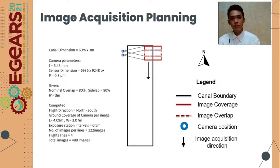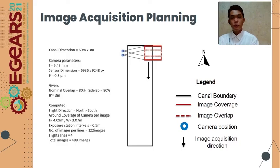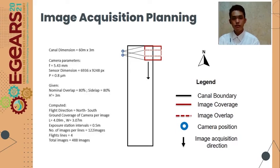For image acquisition planning, using the camera parameters and the dimensions of the site, we determined the approximate value of the exposure station interval, the number of images per line, the number of flight lines, and the total number of images.